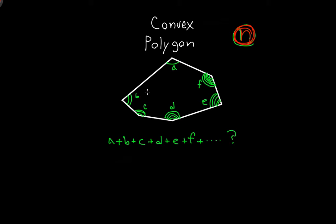So how can we approach this problem? Is there any type of shape that we know the sum of the interior angles of? That's right — a triangle. We know that the interior angles of a triangle all sum up to 180 degrees. So for angles a, b, and c of a triangle, a plus b plus c equals 180 degrees.